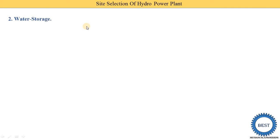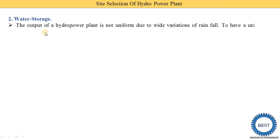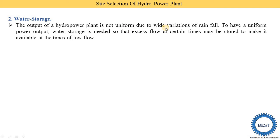Second point is water storage. The output of a hydropower plant is not uniform due to wide variation of rainfall, meaning the output changes with rainfall. To have a uniform power output, water storage is needed so that excess flow at certain times may be stored to make it available at times of low flow. We need to construct a dam in the flow of the river and store the water.